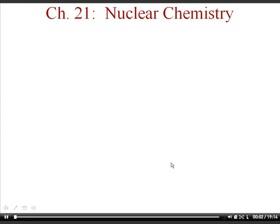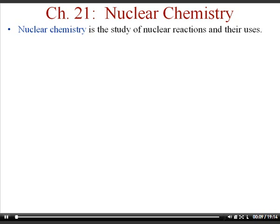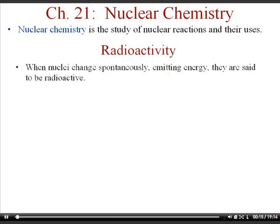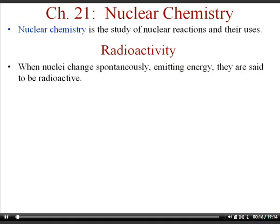This lecture covers Chapter 21 Nuclear Chemistry notes for AP Chemistry. The first topic is the general definition of nuclear chemistry: it's the study of nuclear reactions and how those reactions are used. We also look at radioactivity — when a nucleus changes spontaneously and emits energy, it's said to be radioactive.